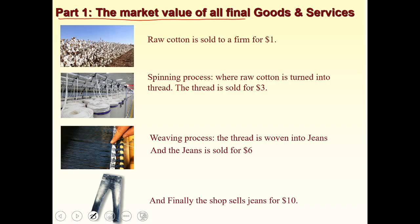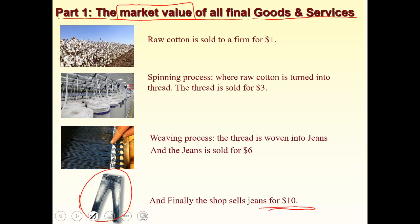The first part of the definition is the market value of all final goods and services. To understand market value, we'll use the example of a pair of jeans. To produce one pair of jeans, raw cotton is required. A cotton grower sells cotton to a firm for $1. The firm then spins the raw cotton into thread through the spinning process.